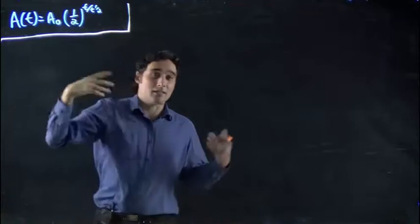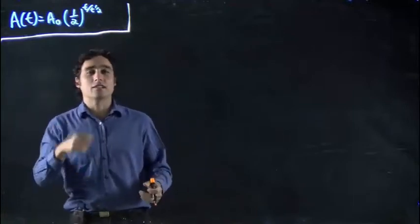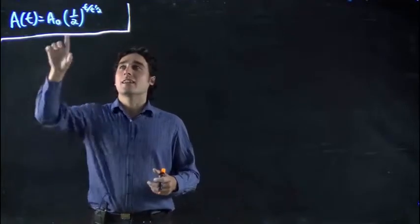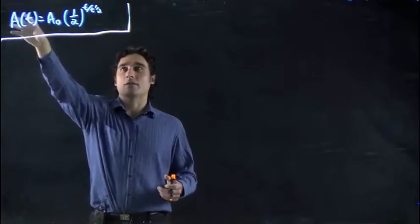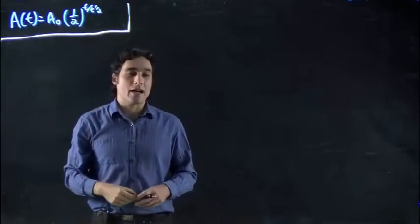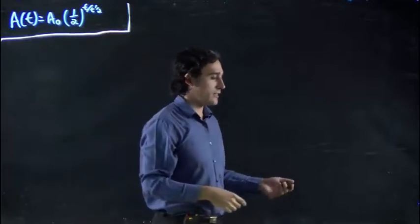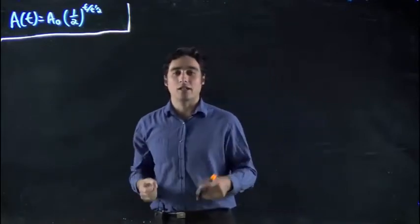A₀ is what we started with. And then t is, again, that time. If it's been five seconds, if it's been three years, that would be the time where we have this A(t) amount. And then t₁/₂ is how long it takes for the half-life to occur, the half-life time.